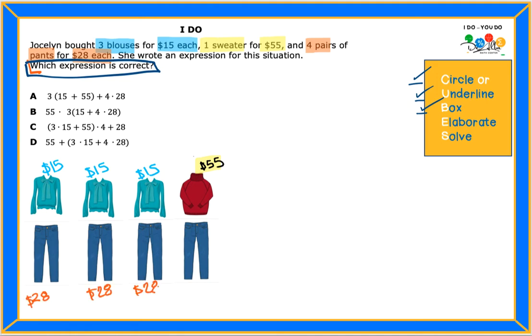Twenty-eight dollars each. So that means how many times do we have to repeat the twenty-eight dollars? One, two, three, four times, right? And the blouses, one, two, three.